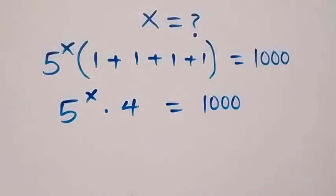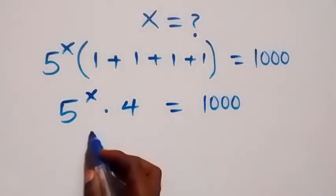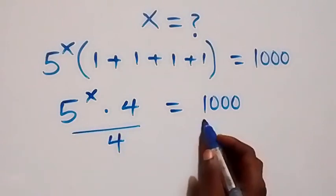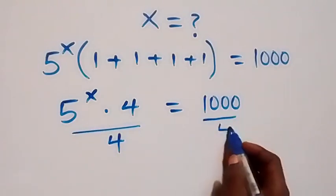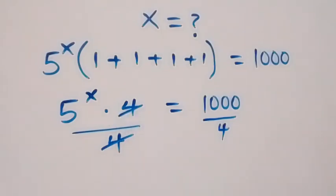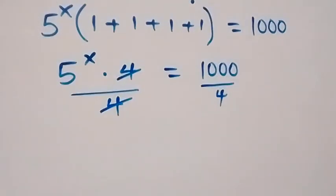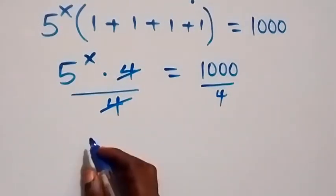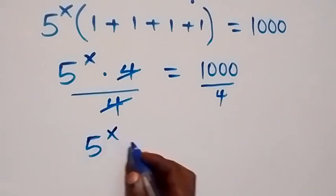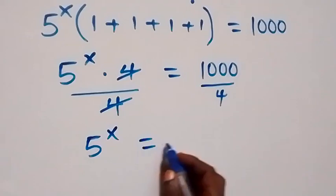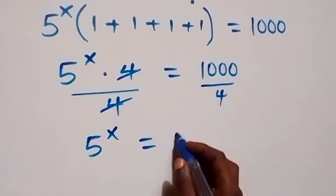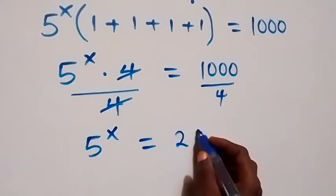The next step: we divide both sides by 4. The 4s cancel each other, and what we have left becomes 5 raised to power x equals 1000 divided by 4, which gives us 250.